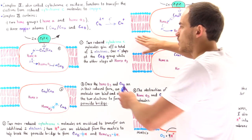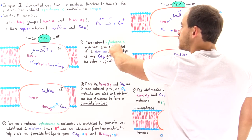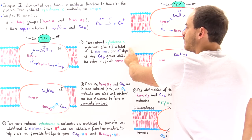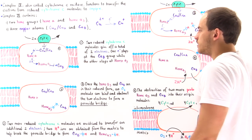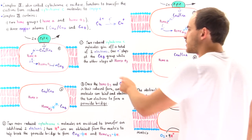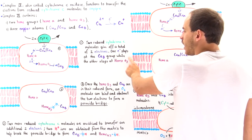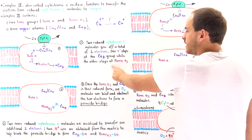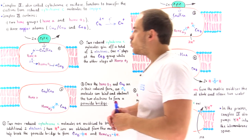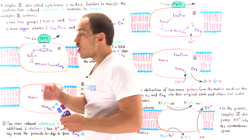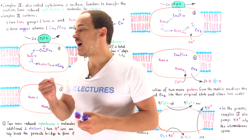To summarize Step 1: two reduced cytochrome C molecules give off a total of two electrons, one electron per molecule. One electron stops at copper B, reducing it, and the other stops at heme A3, reducing it. Only once both groups are in their reduced form can they bind oxygen.